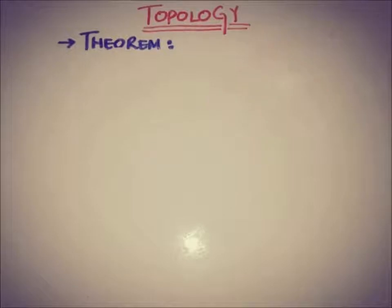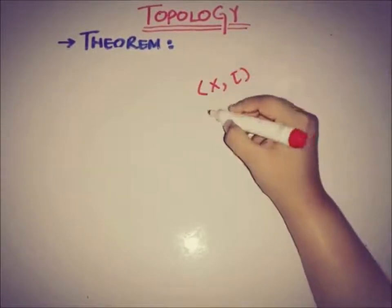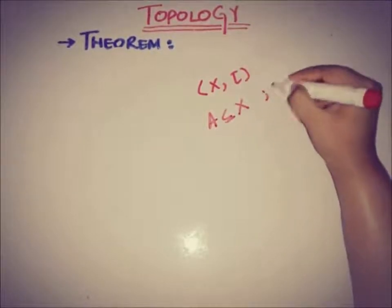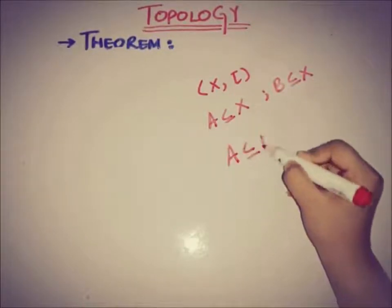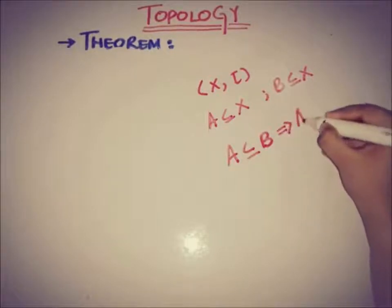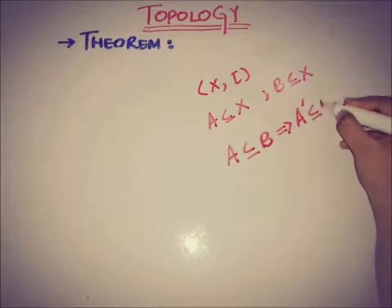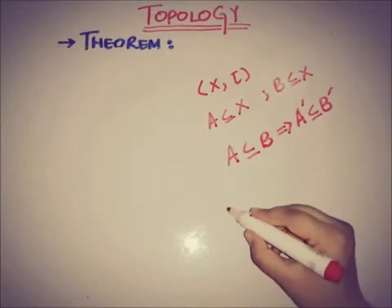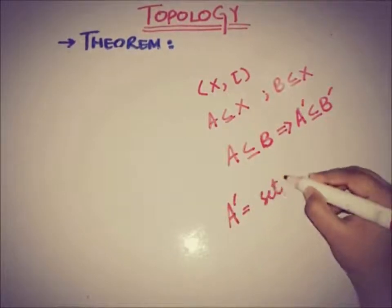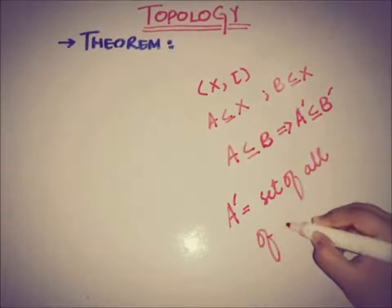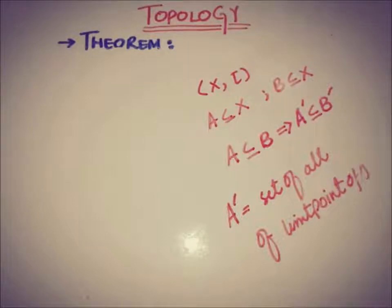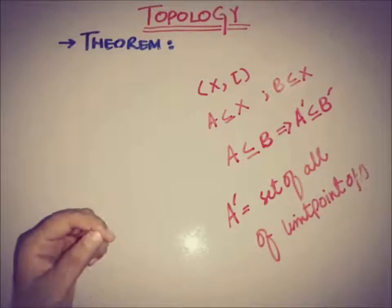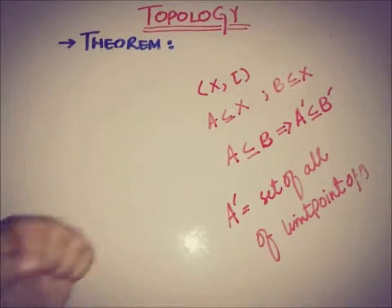The theorem is: if (X, τ) is a topological space and there are two subsets of X — let's say A is a subset of X and B is also a subset of X — then the theorem says that if A is a subset of B, this implies that A′ is also a subset of B′. A′ is the set of all limit points or accumulation points of the set A. So if A ⊆ B, then the set of accumulation points of A is a subset of the set of accumulation points of B.